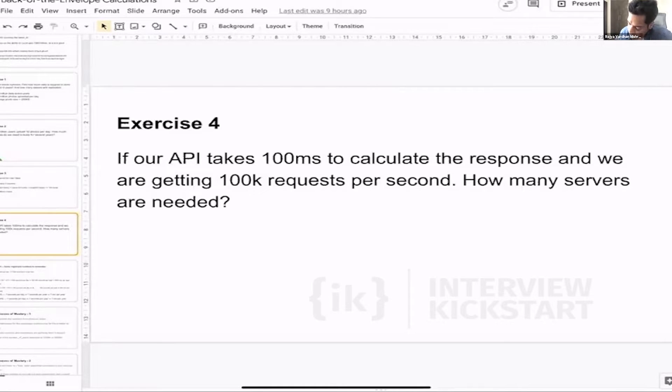If our API takes 100 milliseconds to calculate the response and we are getting 100,000 requests per second, then how many servers will be needed? So the question is that the API latency is 100 milliseconds and we are getting 100,000 requests per second.